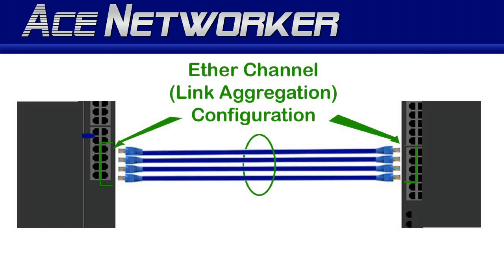Keep in mind that the ether channel is considered the logical interface and is only seen by the configured devices as a single big interface containing multiple physical interfaces — not multiple physical connections. For example, if you have five cables running between two switches and you configure those five interfaces into the same ether channel on both switches, the switches see them as one single big ether channel interface, not five separate connections.